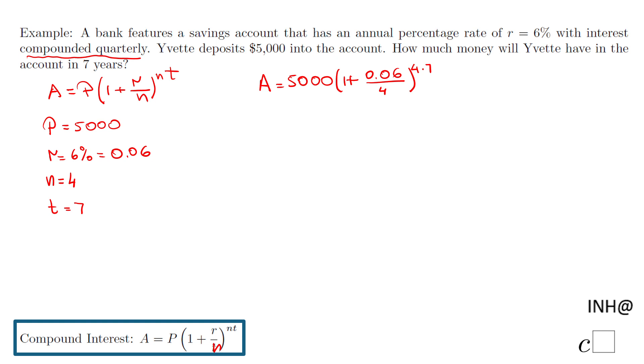One plus 0.06 divided by 4 to the power of 4 times 7, that will be 28. I can do that, and I end up with this amount.